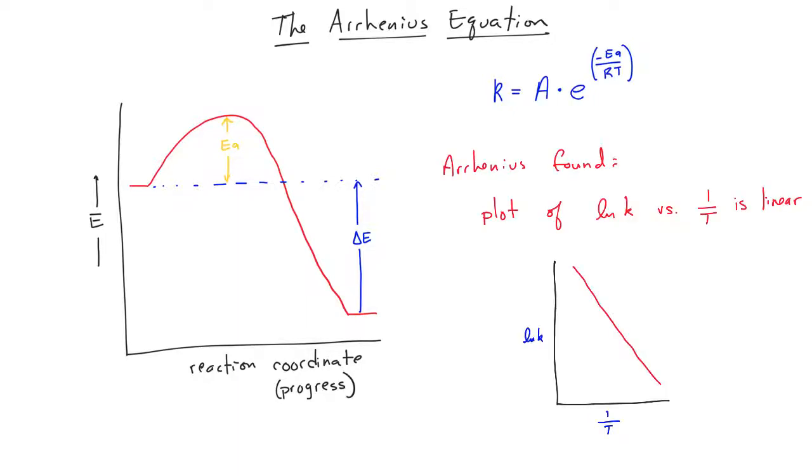Arrhenius discovered that a plot of the natural log of the rate constant versus 1 over temperature gives a linear plot. The y-intercept in this plot is going to be the natural log of A, the natural log of the frequency factor.